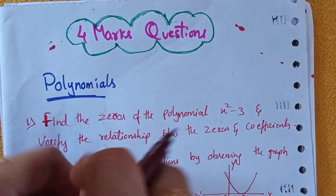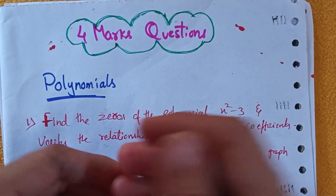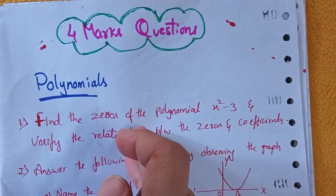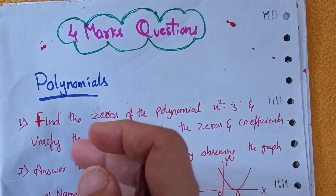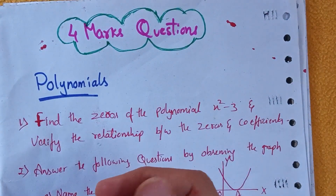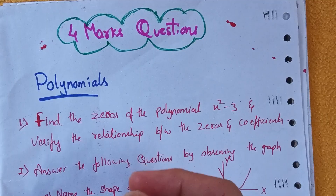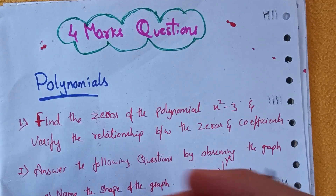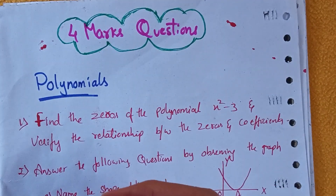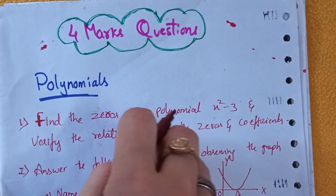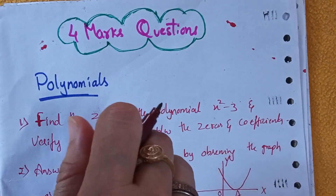You still have three months for your main public exam. If you study from today itself — from this month — there are very good chances to get more than 550 marks. If you are a slow learner watching this video, please go through all the questions I am discussing here.